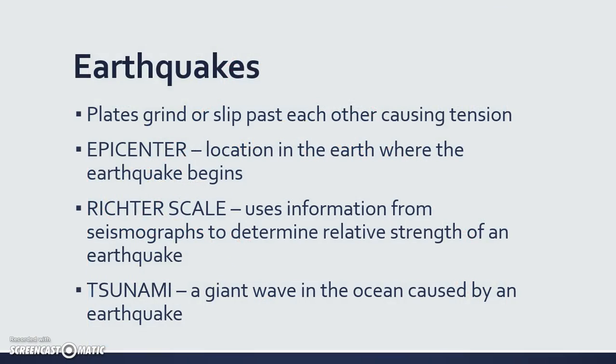Earthquakes occur when plates are grinding or slipping past each other and causing a lot of tension. The epicenter of an earthquake is the location in the earth where the actual earthquake begins. We use information gathered from a seismograph to measure the strength of the earthquake, and then we give it a number that falls somewhere along the Richter scale — sometimes it's a very light earthquake and might only get a one or two, while the most devastating earthquakes are usually seven or eight on the scale. Tsunamis are a result of those earthquakes — they are giant waves that form in the ocean caused by shaking in the ground, disturbing the water and creating a giant wave that sometimes reaches land.